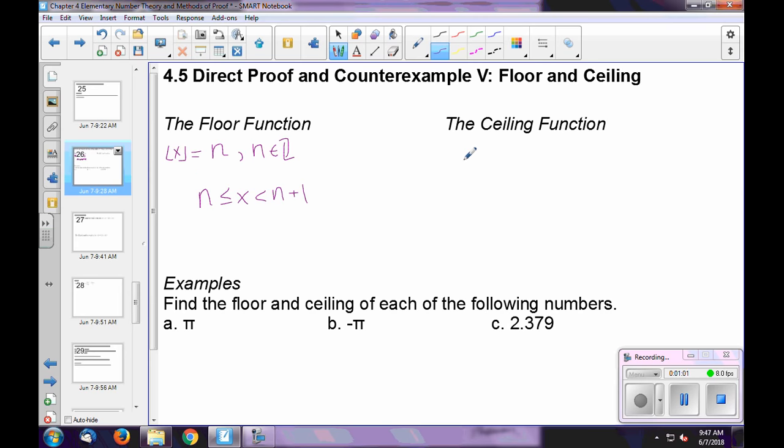On the other hand, the ceiling function is going to take whatever your value is, whatever that real number is, and round it up to the next whole integer. This looks like the following: n minus 1 is our lower bound, and then our upper bound is that value n. The floor function is rounding things down, it's truncating them. So n is your lower bound, because that's what the floor function equals. On the other hand, with our ceiling function, where we're rounding up, n is our upper bound.